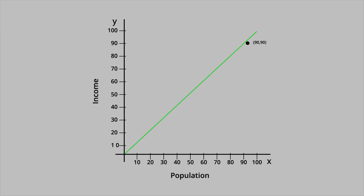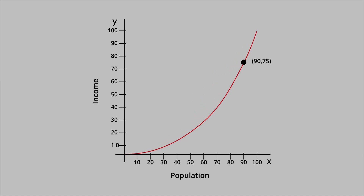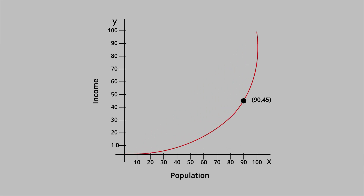So the coordinates 90-90 mean that 90% of the total population earns 90% of the total income. However, the coordinate 90-75 would indicate that 90% of the population earns 75% of the total income. In such a society, some people are making more money than others, but the inequality is not extreme, and the Gini Coefficient will be closer to 0. We can also imagine the coordinate 90-45, which shows that 90% of the population controls only 45% of the income. Income in this society is distributed much more unequally, and the Gini Coefficient will be closer to 1.